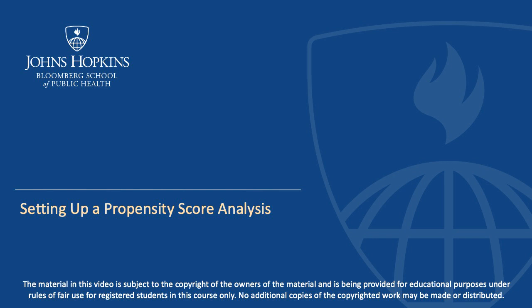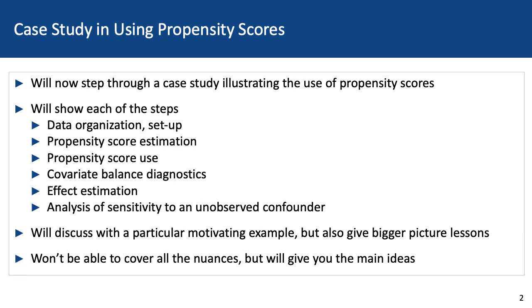Hi, everyone. This is Dr. Stewart. I'm here to talk through a case study in using propensity scores. What I'm going to do is basically show you from beginning to end the steps you need to do when carrying out a propensity score analysis. This is going to include data organization and setup, propensity score estimation, how to use those propensity scores, covariate balance diagnostics, effect estimation, and finally, analysis of sensitivity to an unobserved confounder.